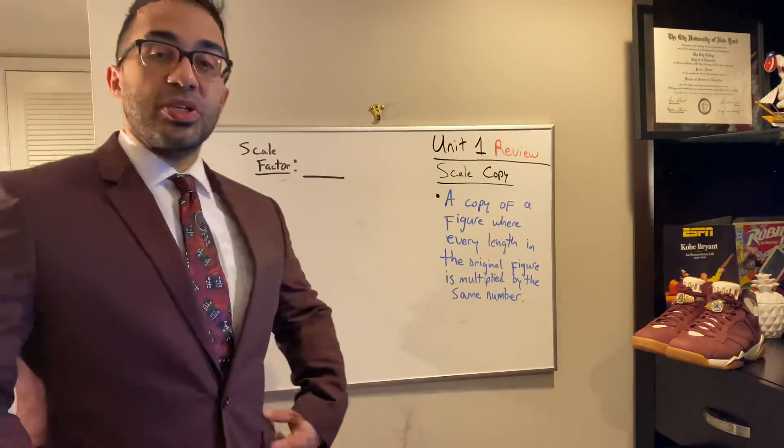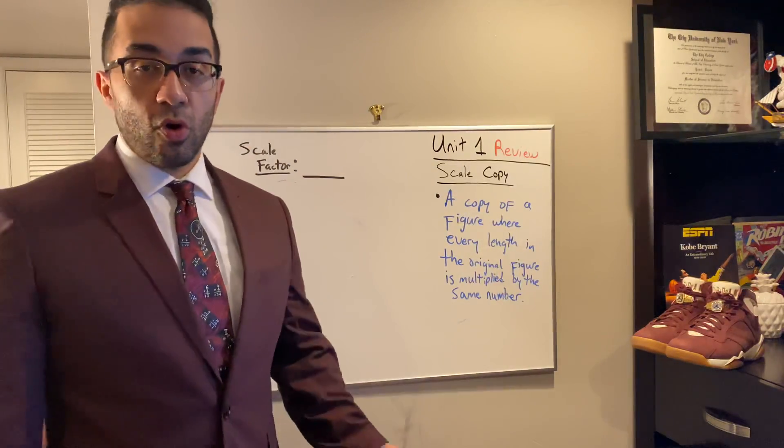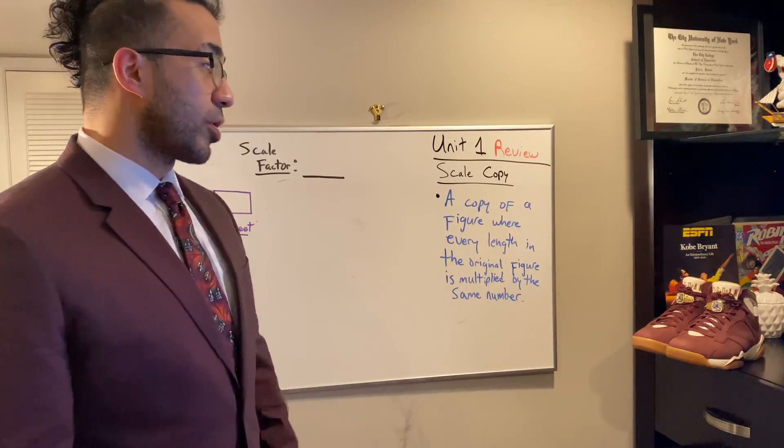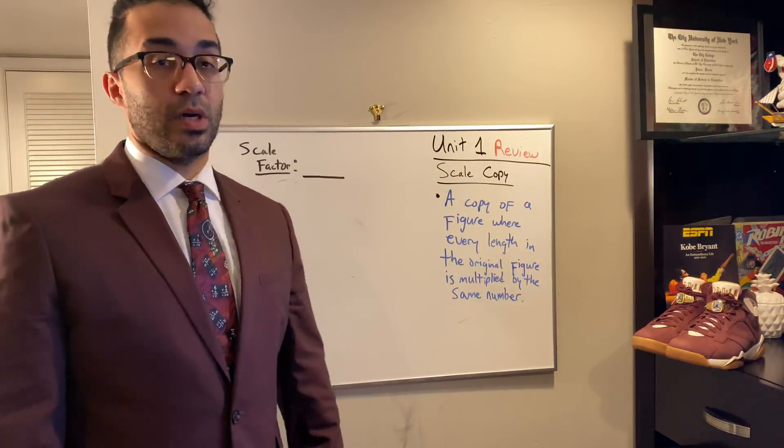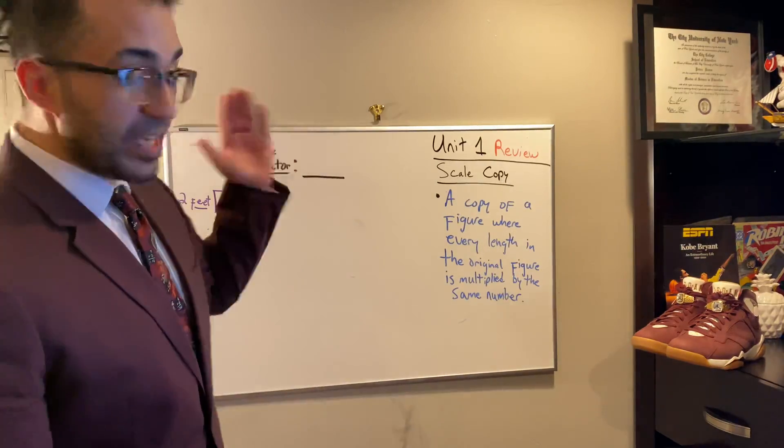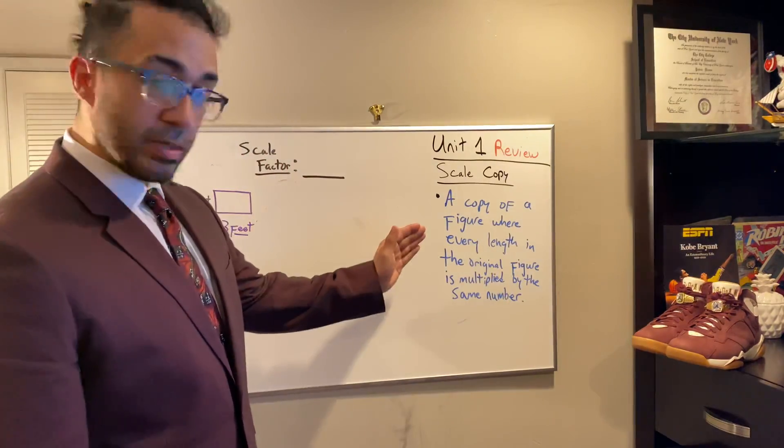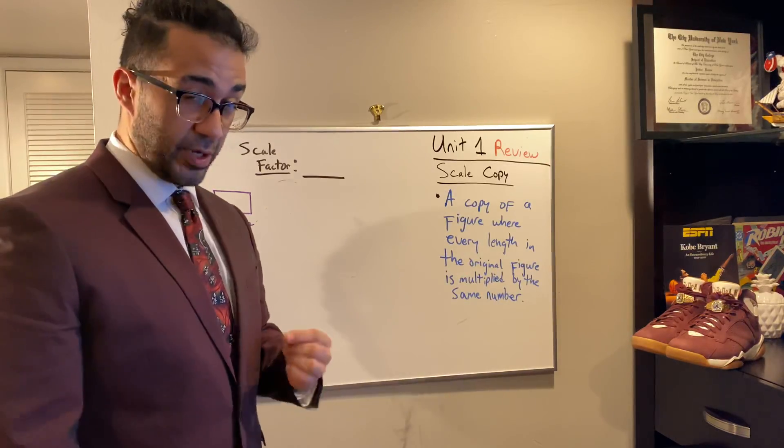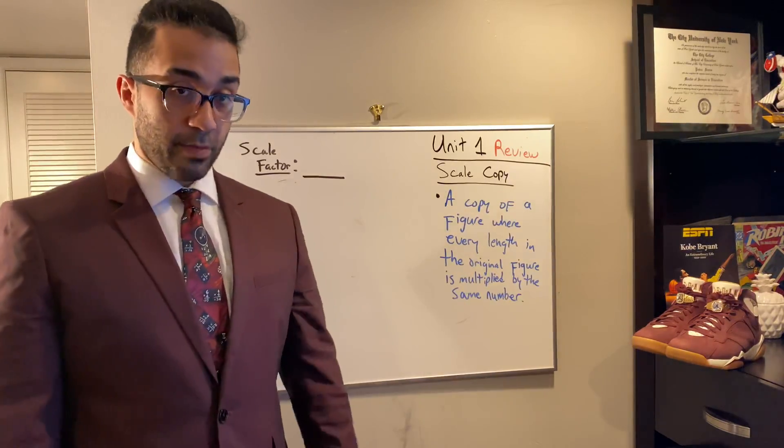So today begins a series in which we're going to review all the wonderful awesome math things we've learned since way back in September. And we're going to start with unit one, which was scale copies. Now by definition, a scale copy is a copy of a figure where every length in the original figure is multiplied by the same number.